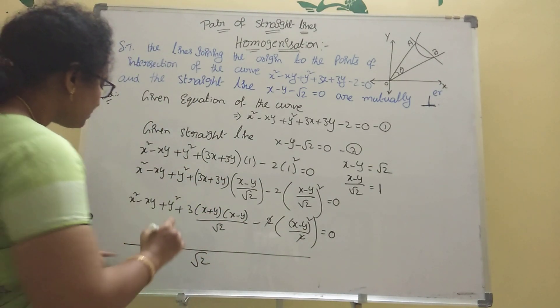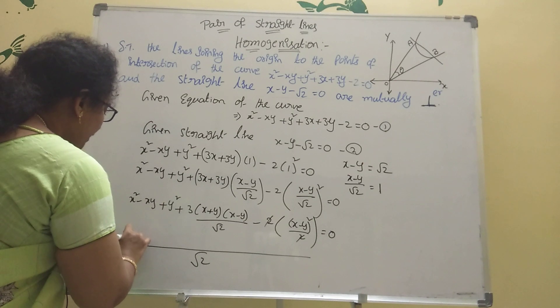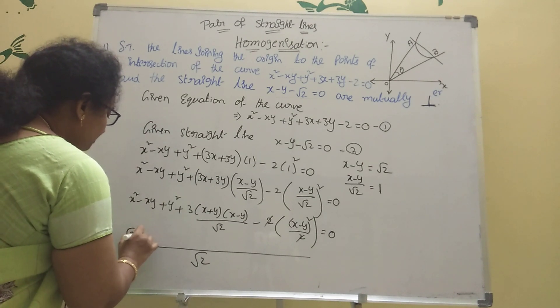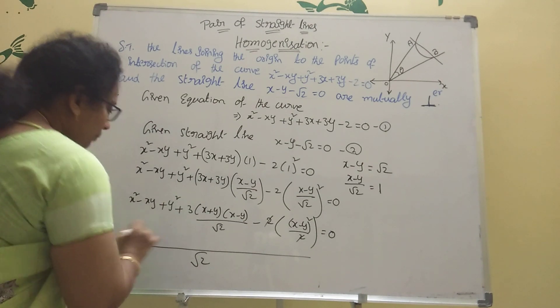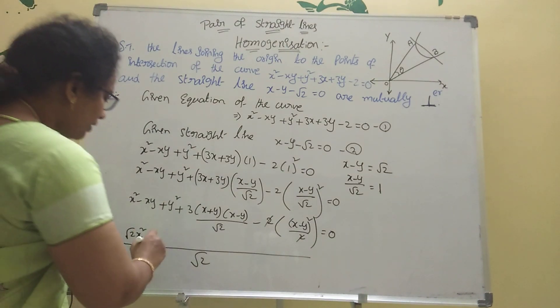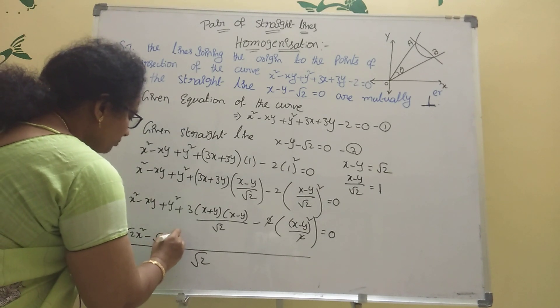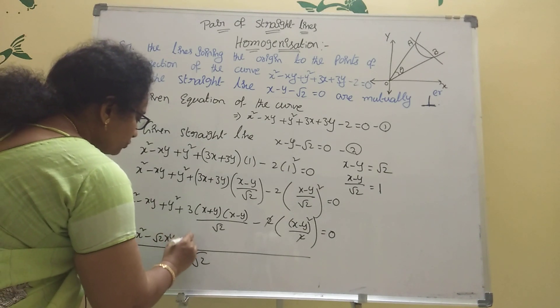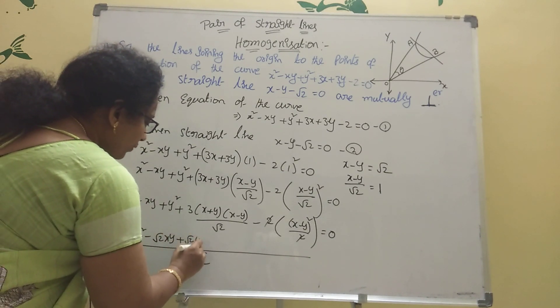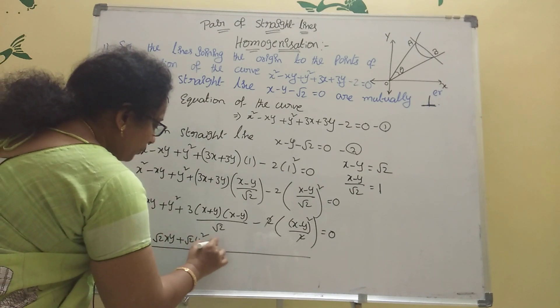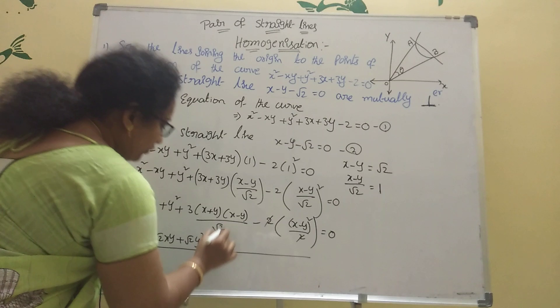Root 2 into x squared gives root 2 x squared. Every time you have to multiply them. Root 2 xy plus root 2 y squared plus 3 into — listen, here by 1 is there. That's why you have to multiply them: root 2 into 3 terms.